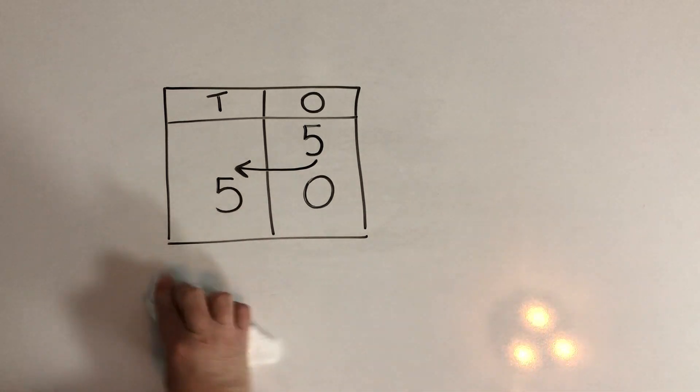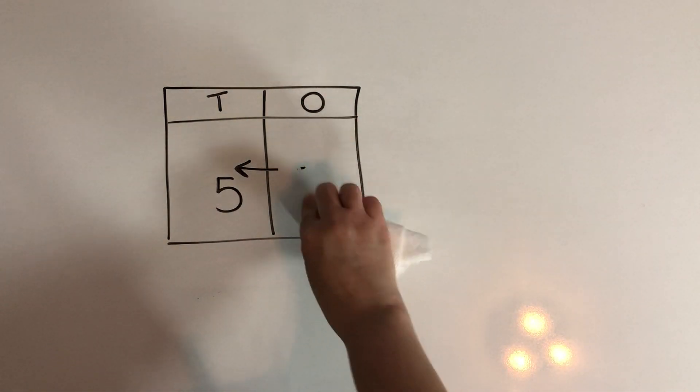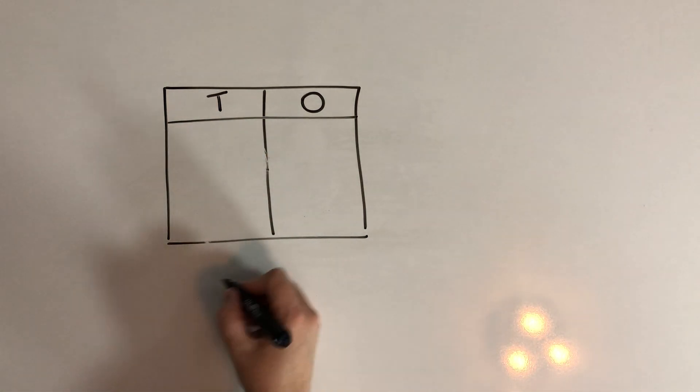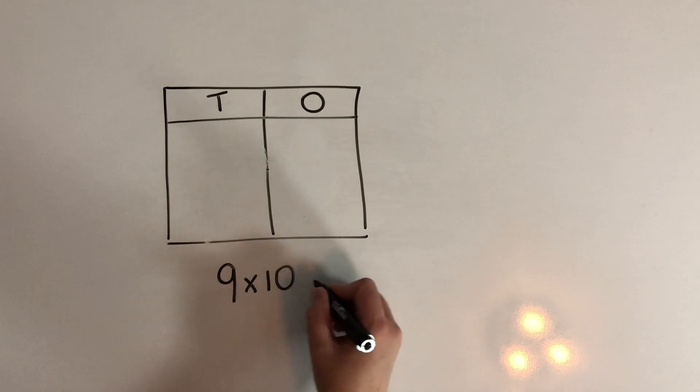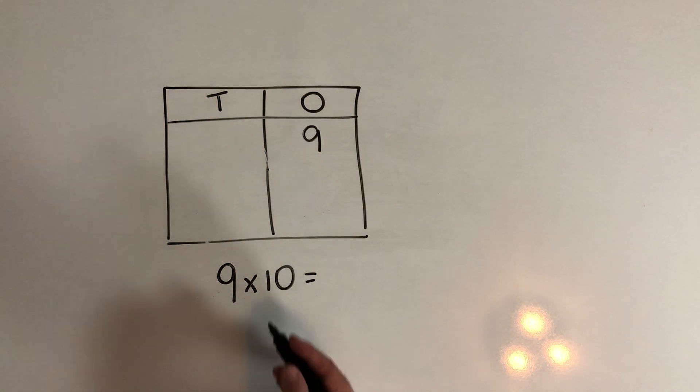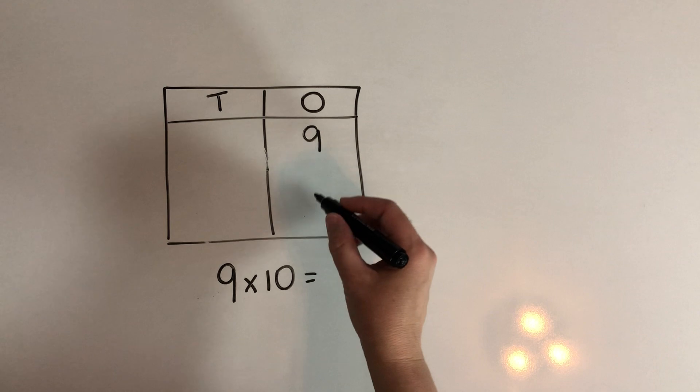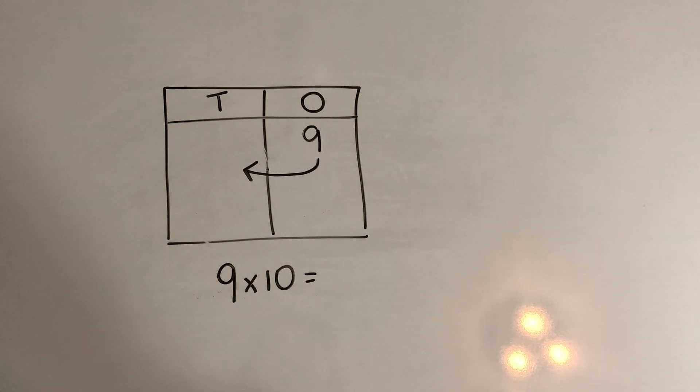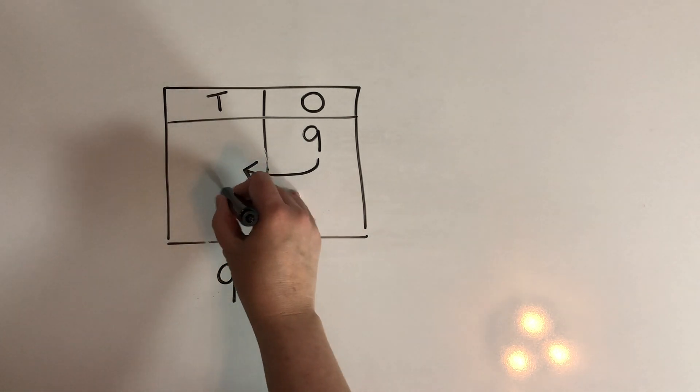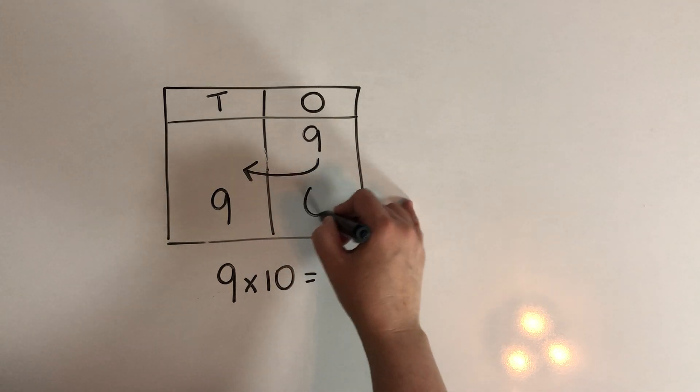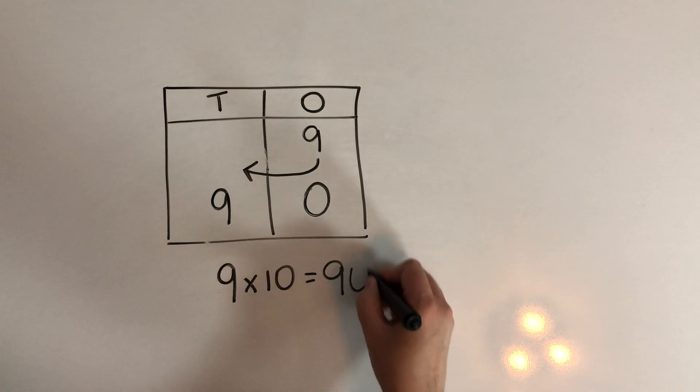Now let's try with another one. Let's try with 9 times 10. So this 9 is 9 ones, isn't it? Now when we multiply by 10, we move the 9 one place to the left because we're making it 10 times bigger. So the 9 is going to come over to the tens place. Now we have an empty space in the 1s so we'll fill that with a 0 and we get 90.